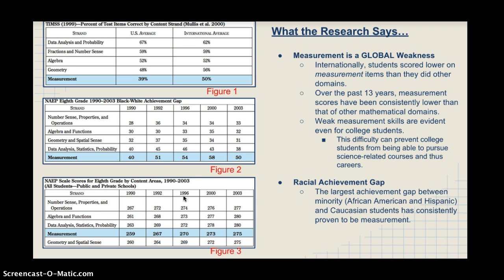This is an issue in terms of how many students are going into science-related careers, and right now STEM is such a huge thing, so this is an issue for our country. Additionally, there is a significant racial achievement gap. The gap between African-American and Caucasian students is continuously pretty high in the area of measurement. Overall, measurement isn't our strongest category nationally or globally — we have an international problem.